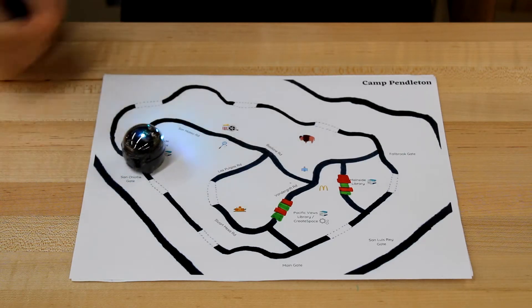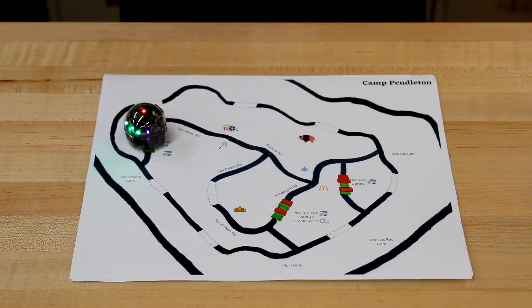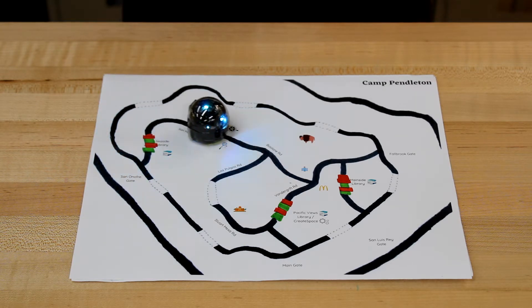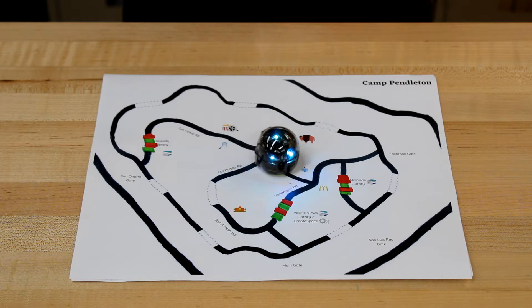Evo by Ozobot is a bite-sized bot that responds to lines and colors. You don't need to download anything to start having fun with Evo. Simply set Evo on a black line and watch it go.